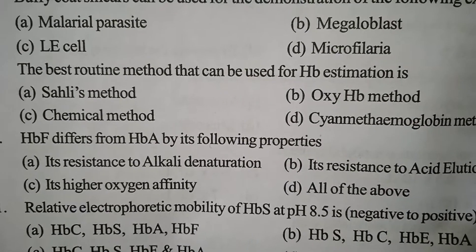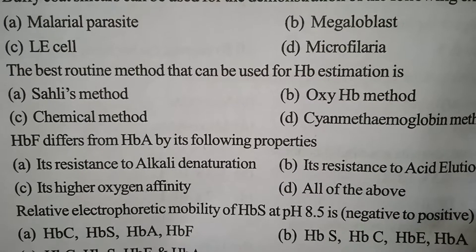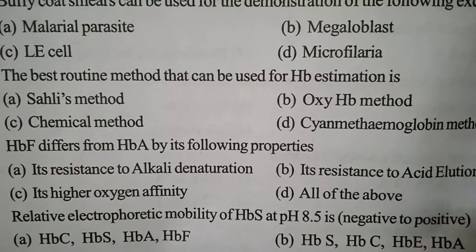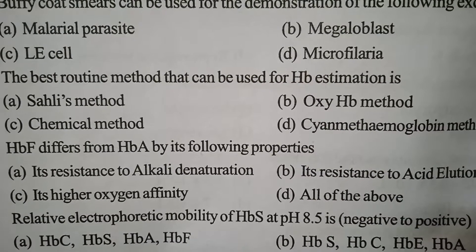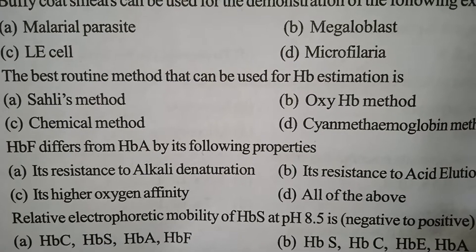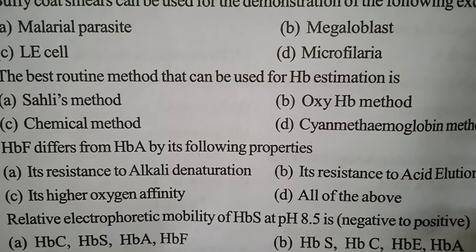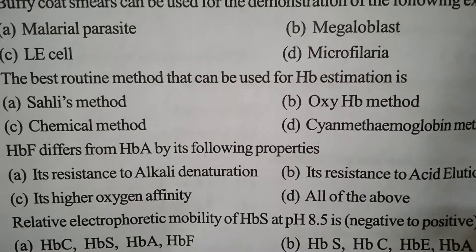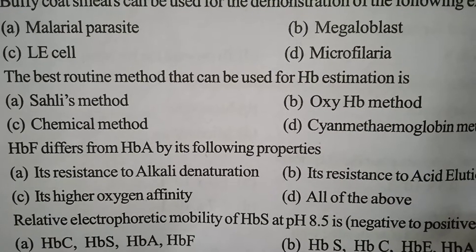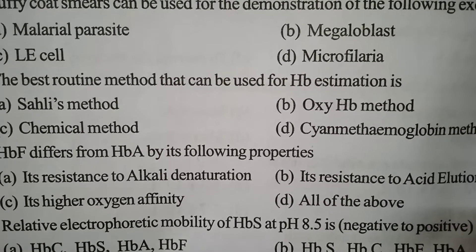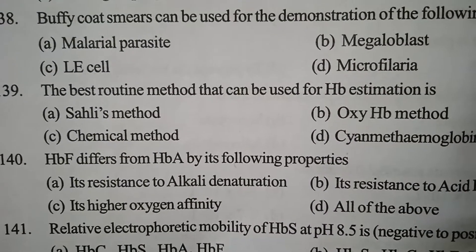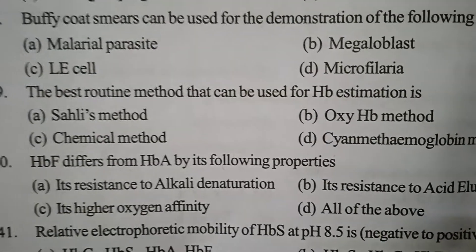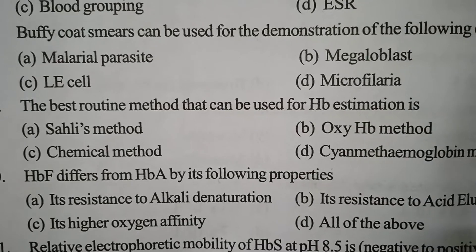Next one. HbF differs from adult HbA by its following properties. Option A: Its resistance to alkali denaturation. Option B: Its resistance to acid elution. Option C: Its higher oxygen affinity. Option D: All of the above. Correct answer: Option D — All of the above.